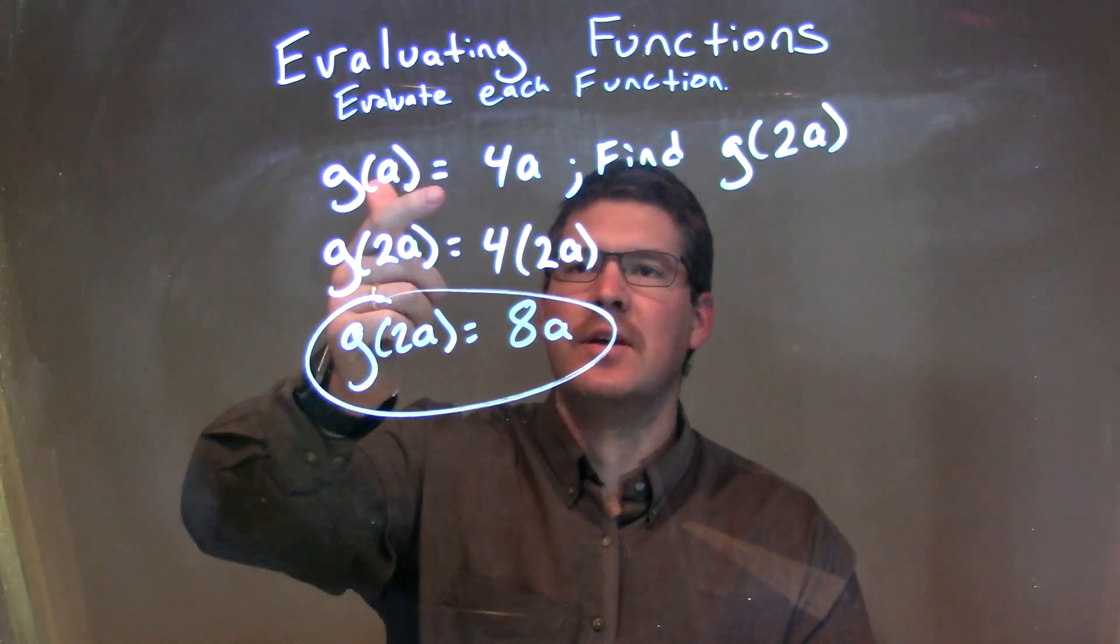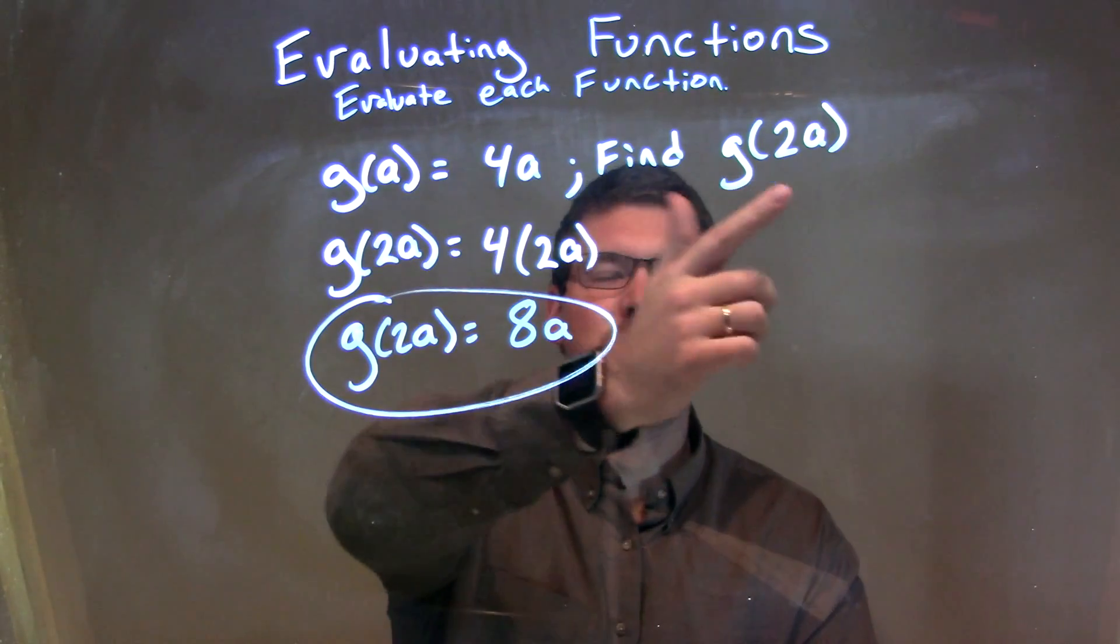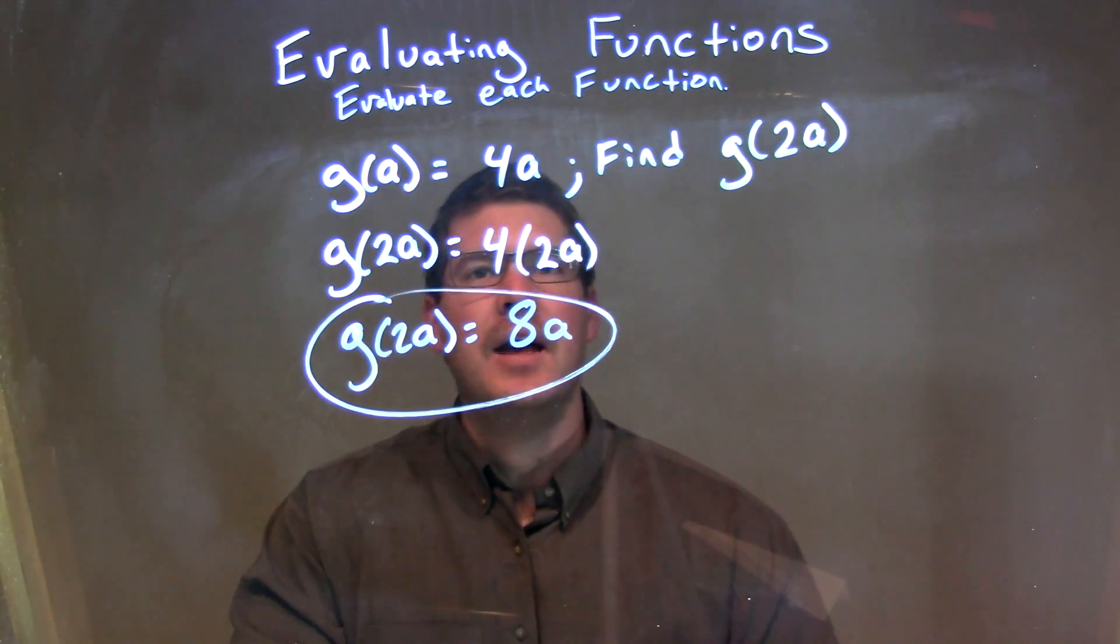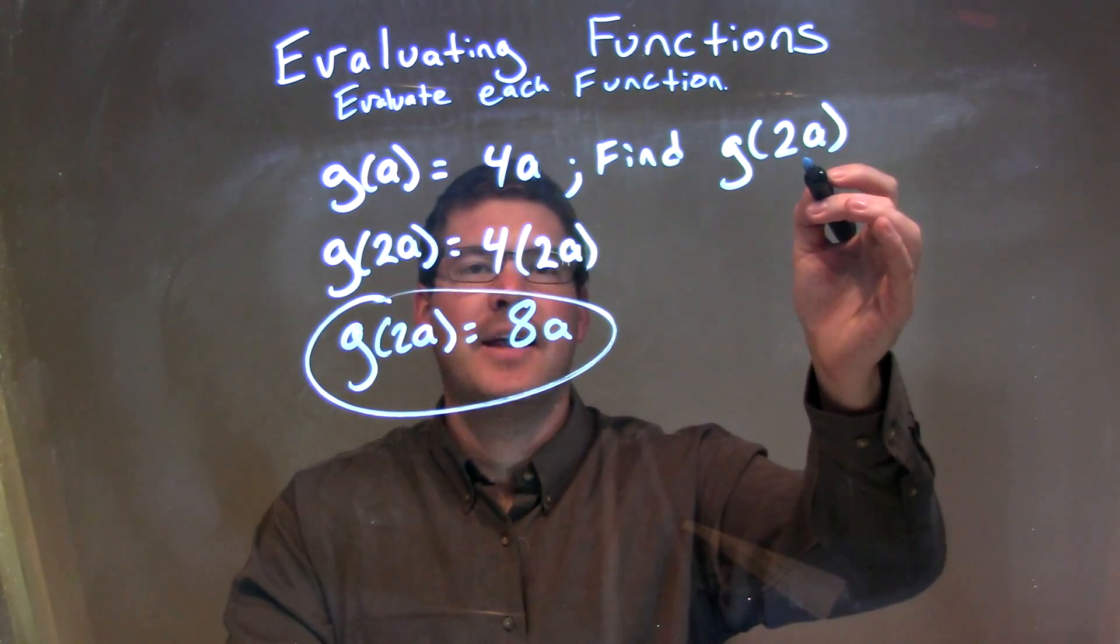So, as a recap, we're given g of a is equal to 4a, and we need to find g of 2a. Well, every single time we see an a, we plug in a 2a.